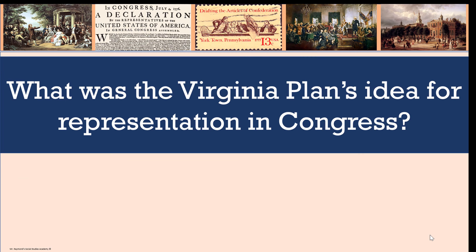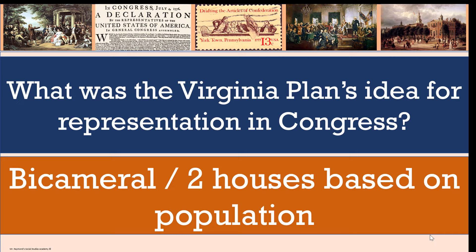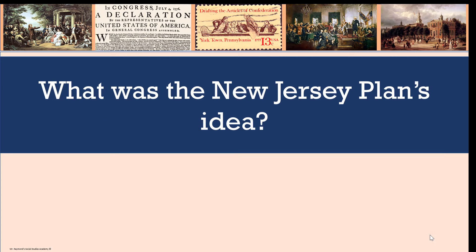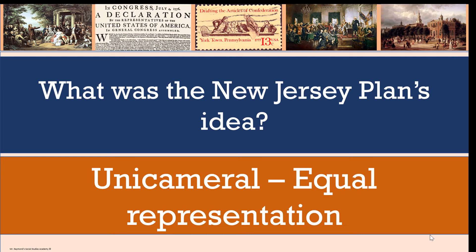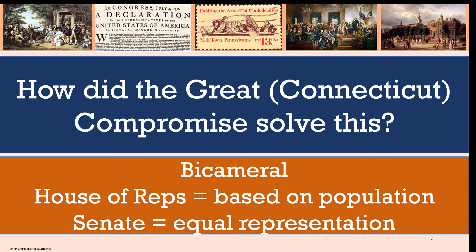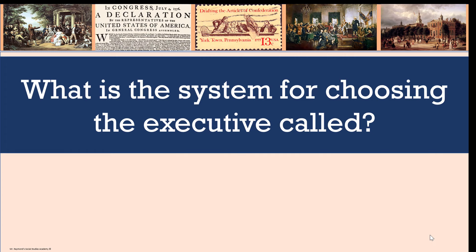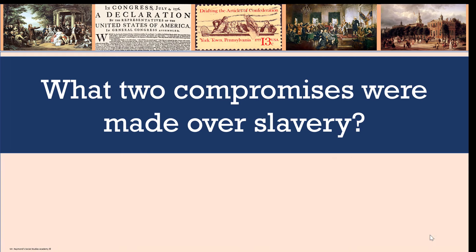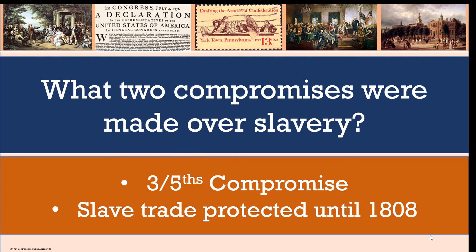What was the Virginia Plan's idea for representation in Congress? A two-house legislature, but both would be based on population. What was New Jersey's plan? A unicameral legislature based on equal representation. How did the Great or Connecticut Compromise solve this? It came up with a bicameral Congress — the House of Representatives based on population and a Senate based on equal representation. What is the system for choosing the executive called? The Electoral College. What two compromises were made over slavery? The Three-Fifths Compromise, and that the slave trade would be protected until 1808.